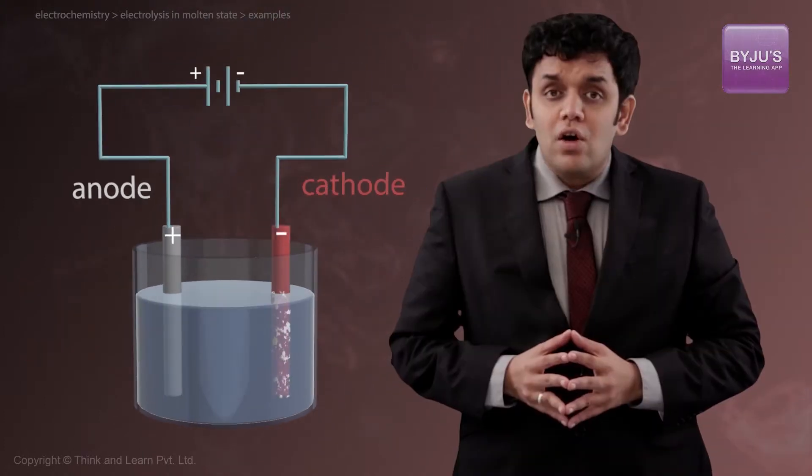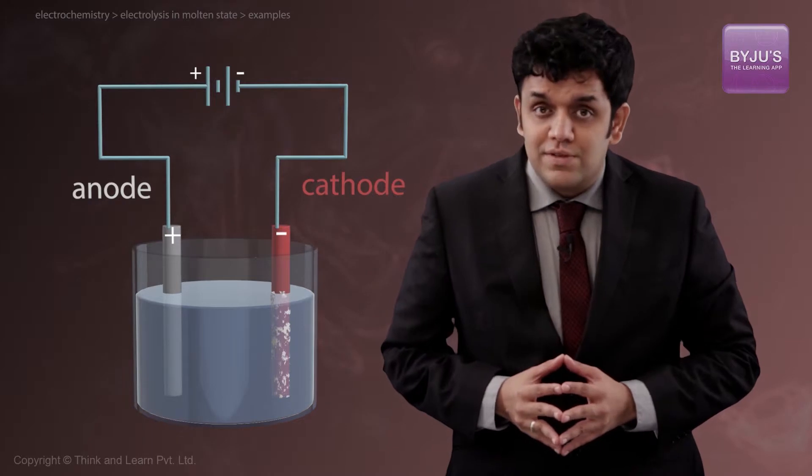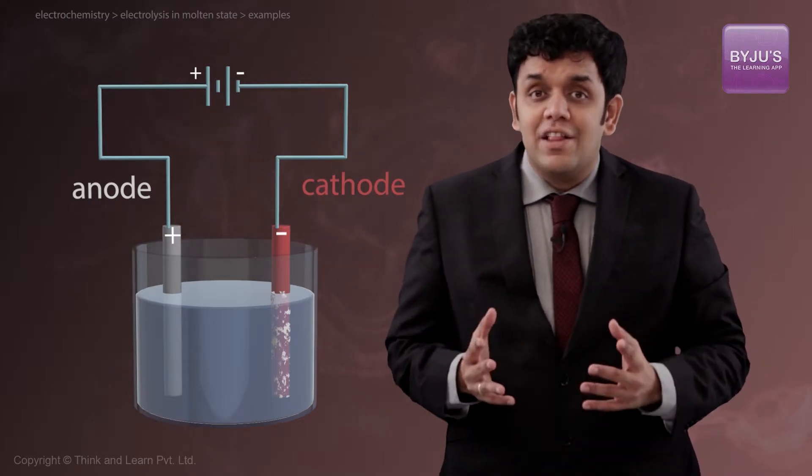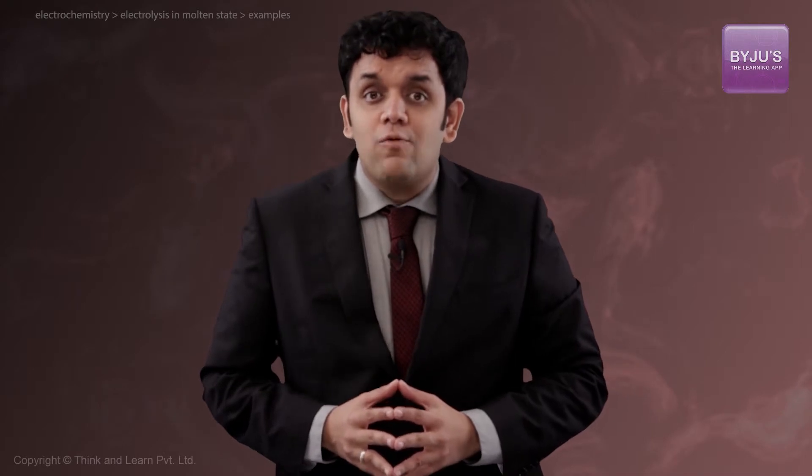Right now, we saw the electrolysis of molten salts. Over here, there is no other competing ion for oxidation or reduction. Let us now look at the electrolysis of salts in an aqueous solution. In this case, the only difference is that water is also going to compete at both cathode and anode for oxidation and reduction.